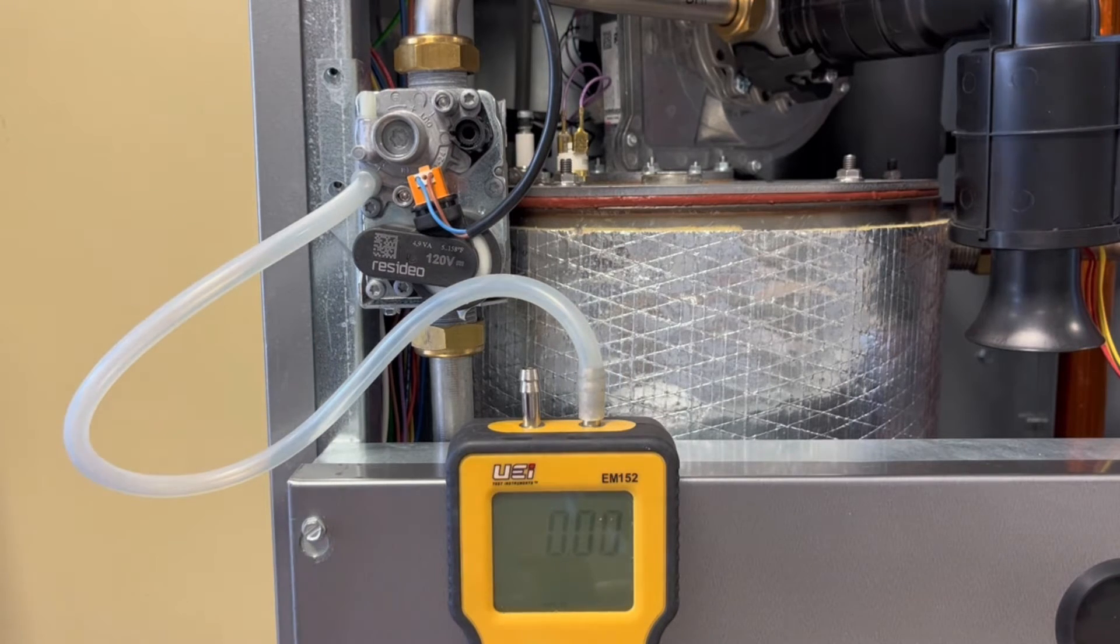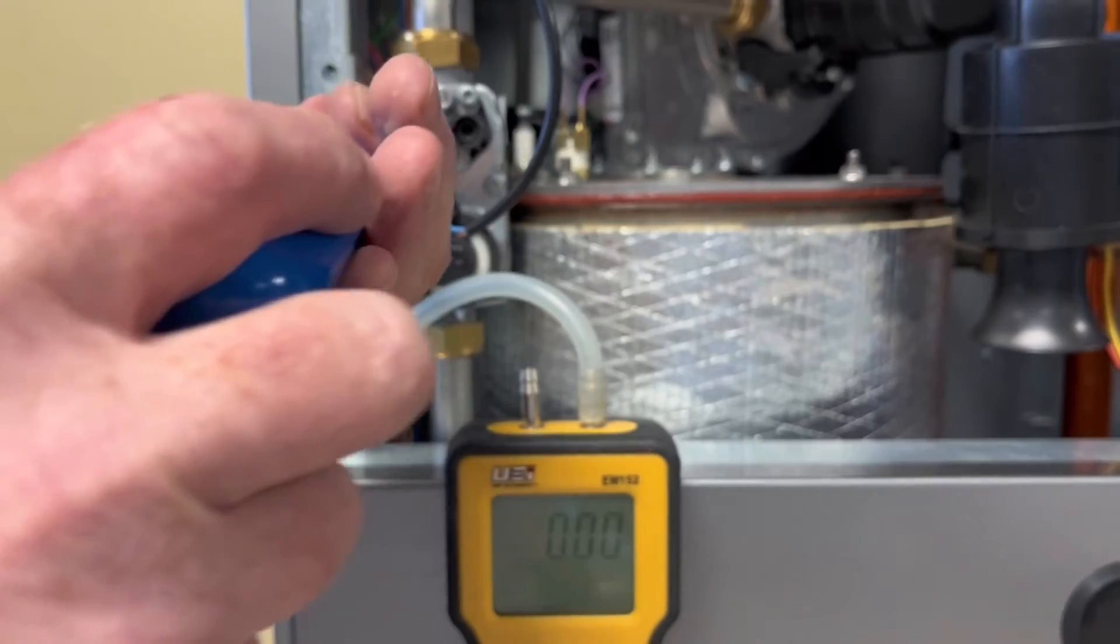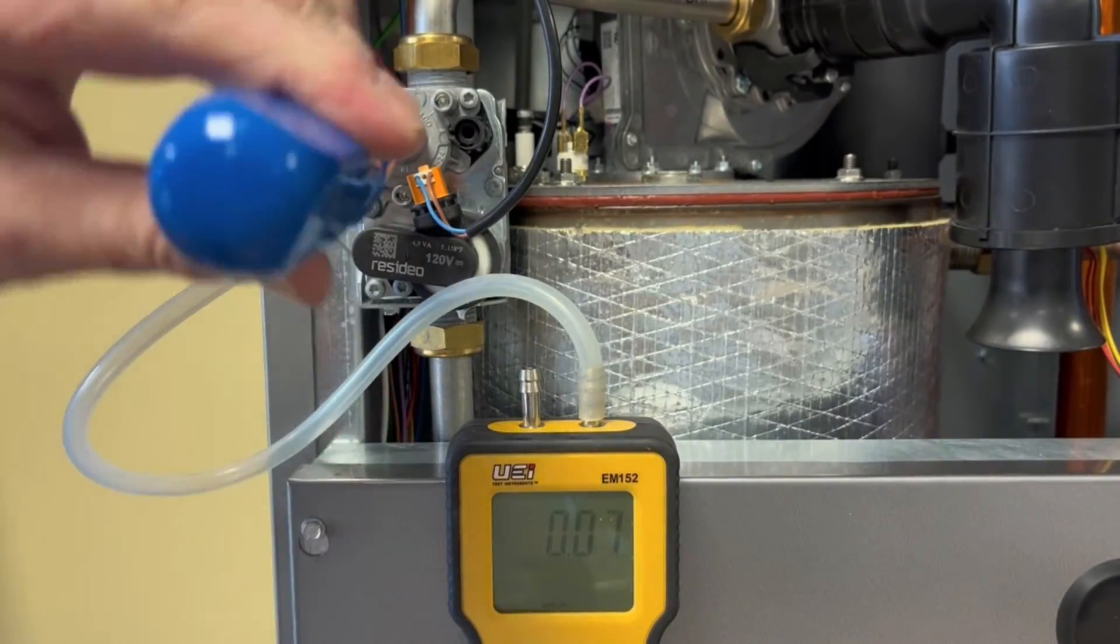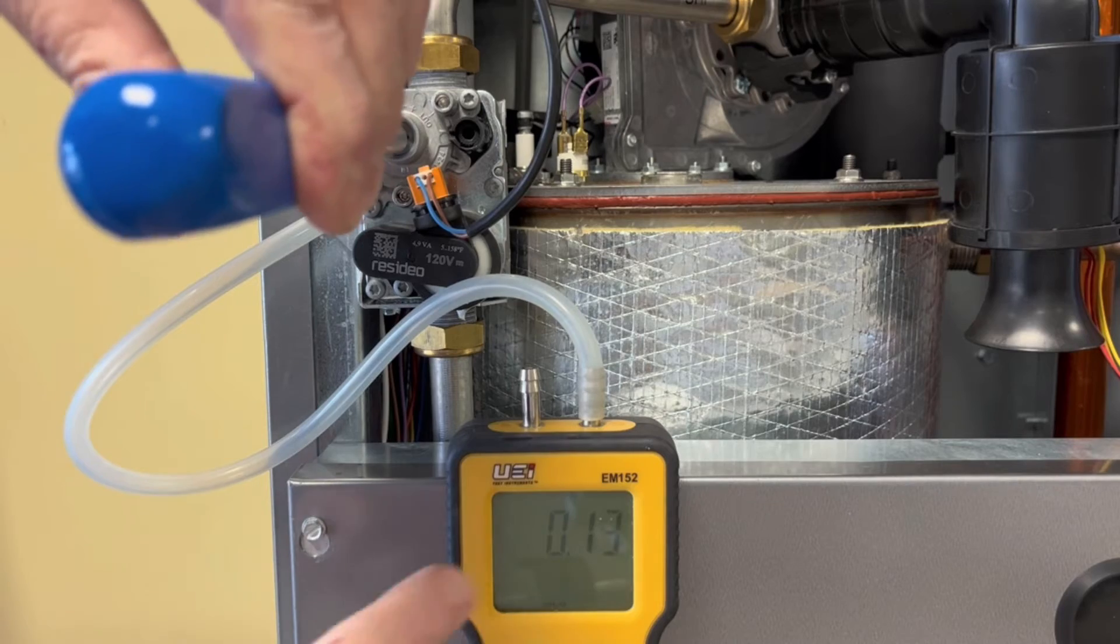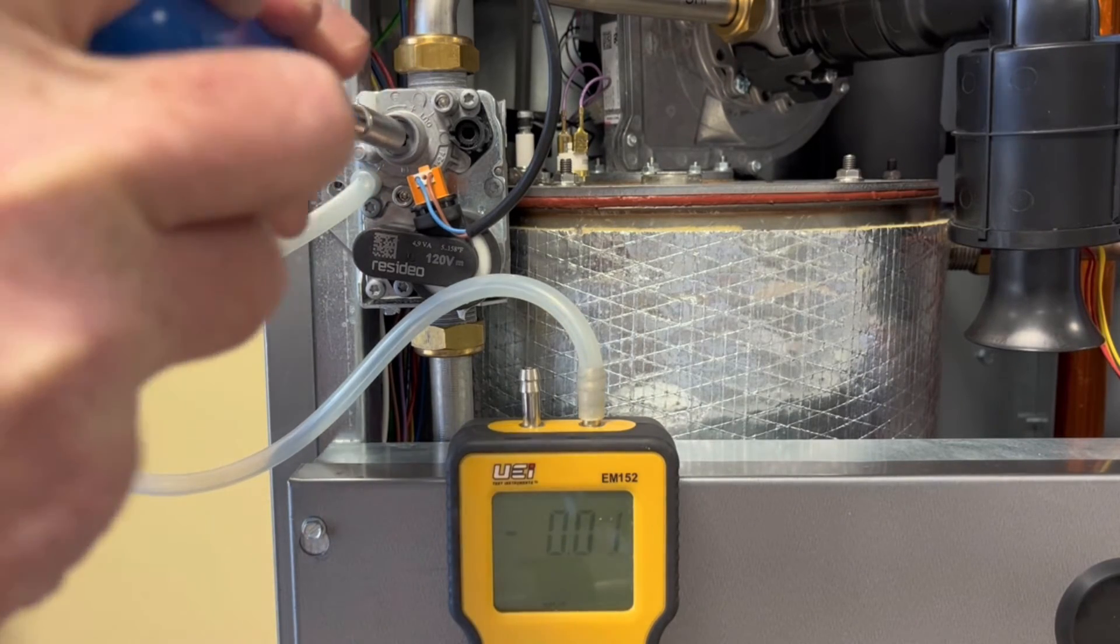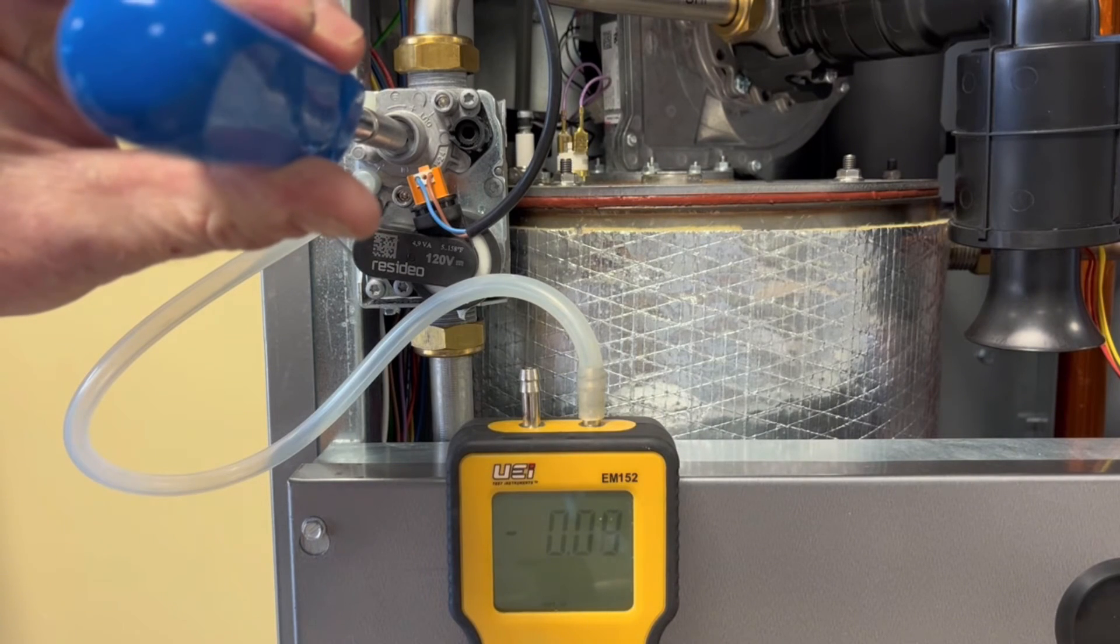On this valve, the pressure is already reading zero, but you'll notice that as I increase the gas flow, the pressure will go positive and become a bigger number. This is by turning the screw clockwise. If I decrease the gas flow by turning counterclockwise, the number will become negative.